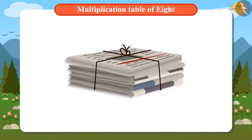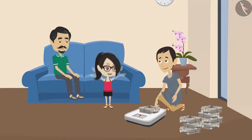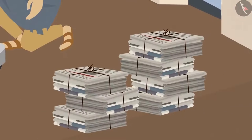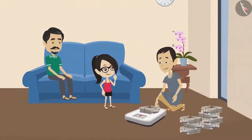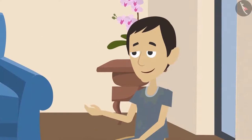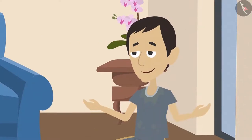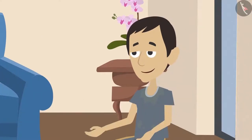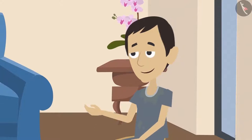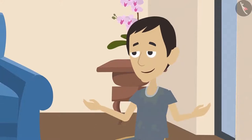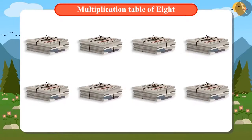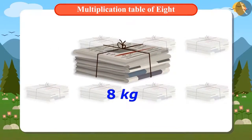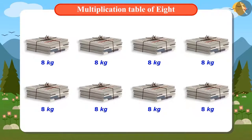One bundle of newspaper weighs eight kilograms. Vandana wants to weigh all the bundles, but the scrap dealer tells her that not all bundles need to be weighed — each bundle would weigh the same eight kilos. There are eight bundles of newspapers in total. If one bundle is eight kilos, can you tell how many kilos of newspapers there are altogether?